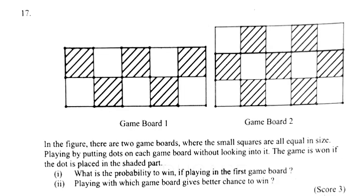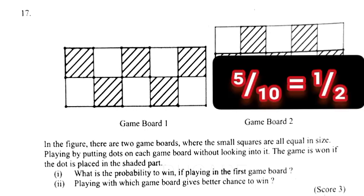17. In the figure, there are two game boards where the small squares are all equal in size, playing by putting dots on each game board without looking into it. The game is won if the dot is placed in the shaded part. 1. What is the probability to win if playing in the first game board? Answer: Probability 5 by 10 equal 1 by 2.